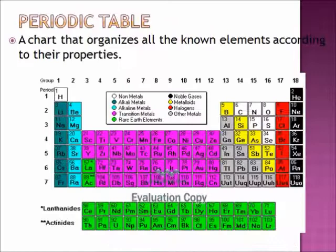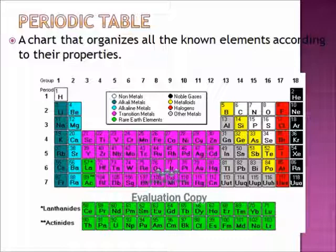Atoms can come together to form molecules and compounds. The periodic table is a chart that organizes all the known elements according to their properties. For our purposes, we don't need to get too in depth. You just need to know how to find an element, its atomic number, and its element name — the easiest way is by symbol. Eventually you'll learn to read the table and determine from an element's location whether it's reactive, a metal, a non-metal, a gas, and so forth.